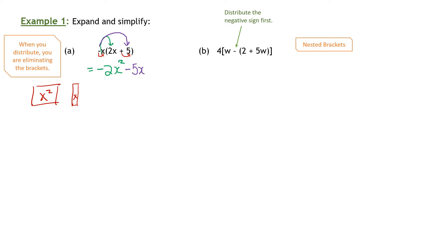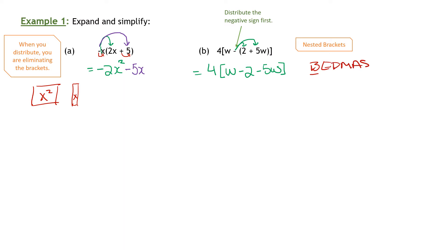I'm going to take this negative in front of the bracket and it has to go into the bracket. So my first line: I have the 4 — I'm not touching that right now — and that W is not coming into the bracket, only the negative is. So that's a negative 2, or subtract 2, and now the negative comes over and that's negative 5W. Once that's done, now I have one set of brackets. I still have to consider order of operations because of BEDMAS, so I still have to do the brackets first.